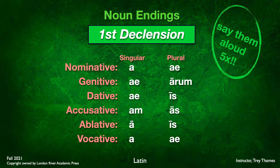I exaggerated those a bit for clarity. When doing the chants, I'm not going to hold them out that long. For practice, say them out loud at least five times. When we're reading Latin text, we will try to differentiate between the A with the macron in the ablative singular and the A in the vocative singular without the macron. But for chanting purposes, we'll treat them similarly.